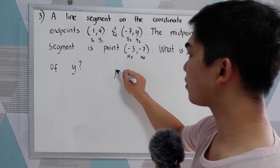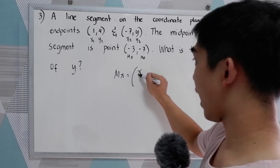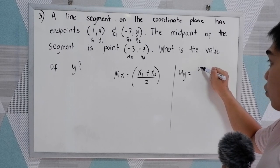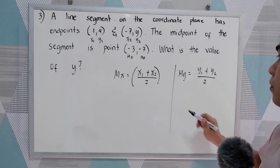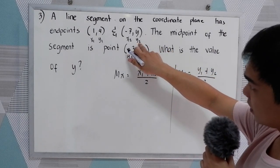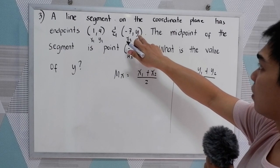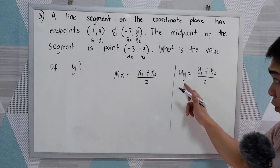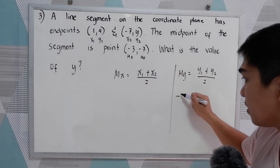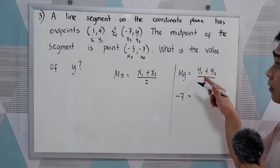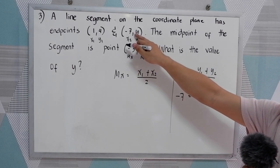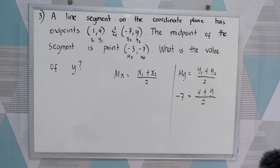Our formula: we have the midpoint for x — that is x sub 1 plus x sub 2 all over 2, and for y — that is y sub 1 plus y sub 2 all over 2. Since y is the missing value, we are going to use our formula for y. So our midpoint for y is negative 7. Substituting: negative 7 is equal to y sub 1, which is 4, plus y sub 2, which is our missing value y, all over 2.